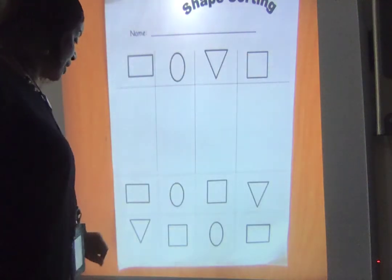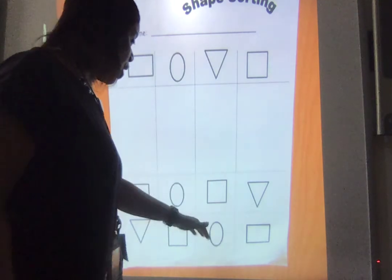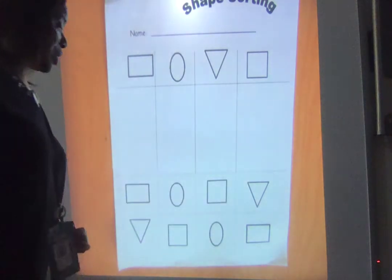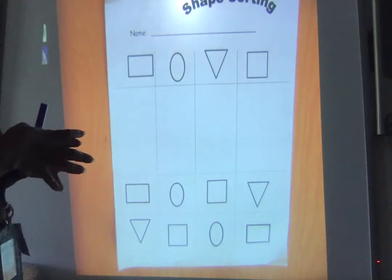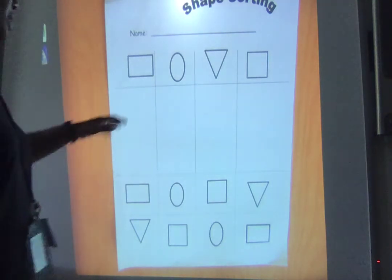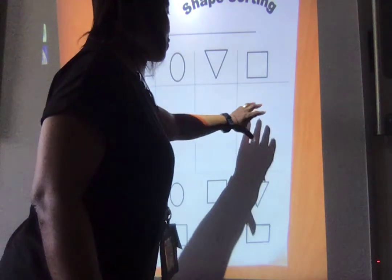We're down here. I see a rectangle. Then I see a triangle, an oval, a square, a square, an oval, a triangle, and a rectangle. Boys and girls, when we sort, we put things in groups based on how they are the same or alike. So I need all the rectangles here, ovals here, triangles here, and squares here.